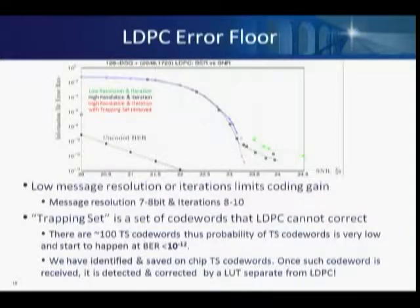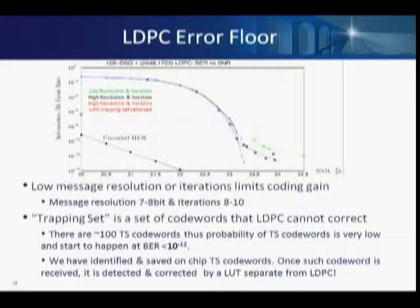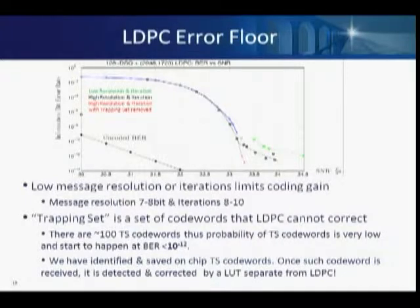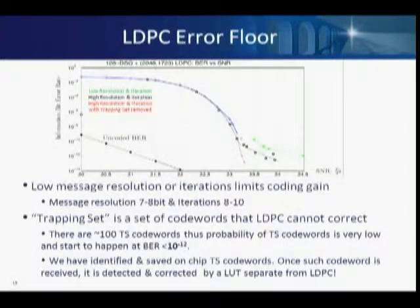LDPCs have error floors in the form of trapping sets. What we've done is identify all of these trapping sets, tabulate them, and place them in a separate digital logic block post-LDPC. Once we detect any of these trapping sets, we decode and correct the errors. As you can see in the BER versus SNR curve: with low-resolution implementation you get the green line, with better resolution the black line, and with our LDPC decoder with trapping set correction you get the red line — significantly improving the error rate.